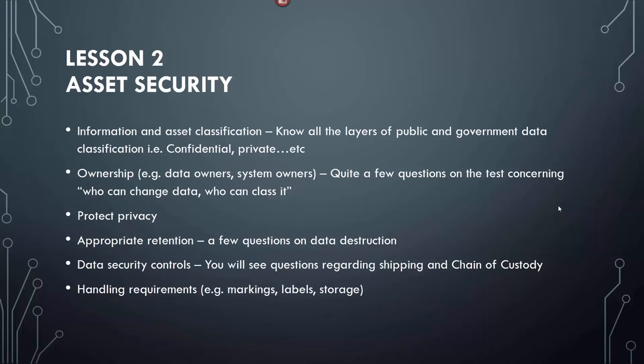In Lesson 2, we'll cover asset security. Information and asset classification is big on the test — you have to know all the layers of public and government data classification, like confidential and private. You'll need to understand ownership. There are quite a few questions on the test concerning who can change the data. Protecting privacy, appropriate retention, data security controls, shipping, chain of custody, and handling requirements like marking, labeling, and storage.